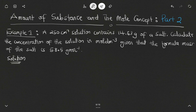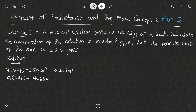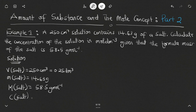The volume of salt solution is 250 cm³, which converts to 0.25 dm³. The mass of salt is 14.63 grams. The molar mass (formula mass) of the salt is 58.5 gram per mol. We are asked to find the concentration of the salt in mol per dm³.